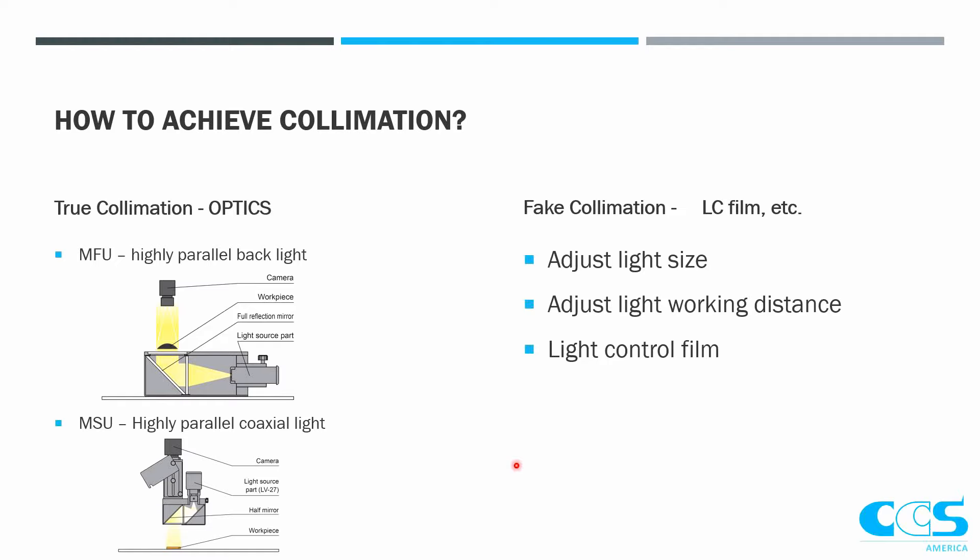So how do we achieve collimation? There are a few ways, but there is one way of doing true collimation, which is doing it through optics. The MFU and the MSU are our highly parallel optically collimated lights. The MFU is our backlight, the MSU is our coaxial light. What happens is there is a point source, or a spotlight, and then an optical system inside to create a collimated light with a very narrow collimation degree.